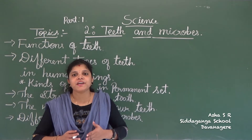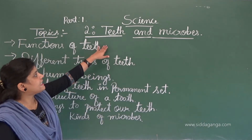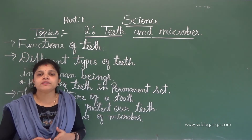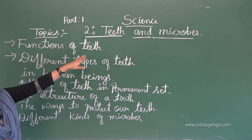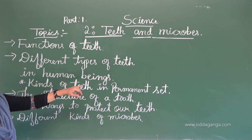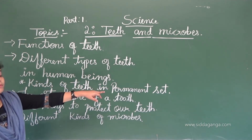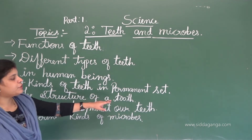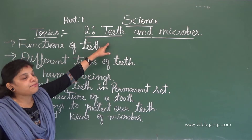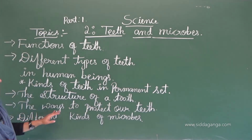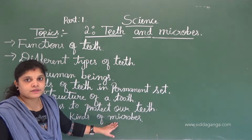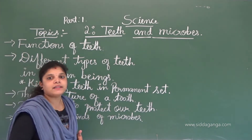Hi, hello my dear students. Today we are going to start the second chapter: Teeth and Microbes. The main topics to be covered in this lesson are: functions of teeth, different types of teeth in human beings, kinds of teeth in the permanent set, the structure of a tooth — tooth is singular, teeth is plural — the ways to protect our teeth, and different kinds of microbes.